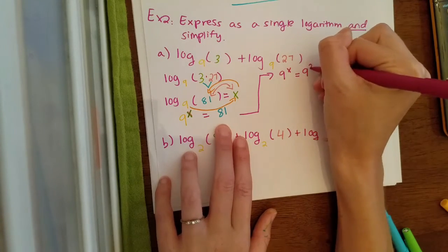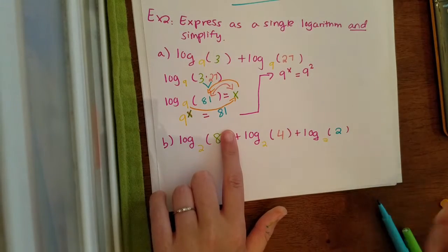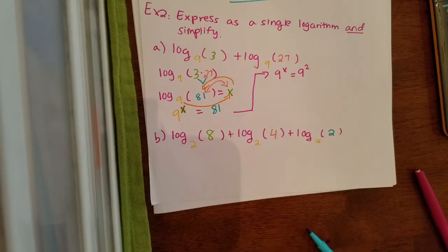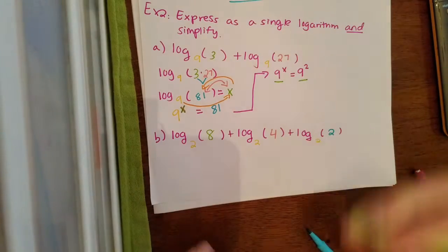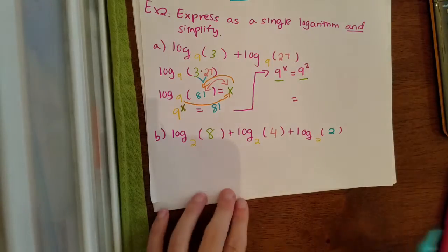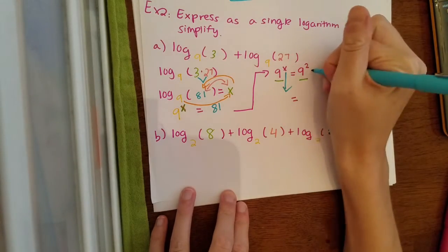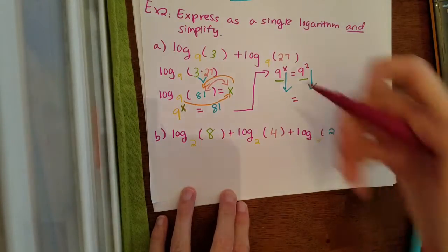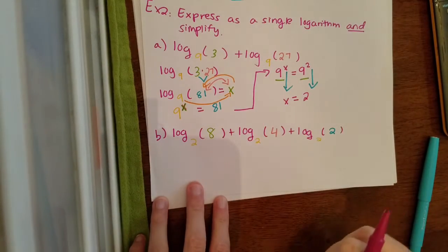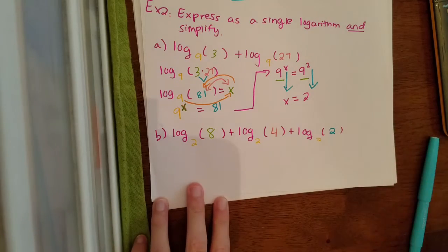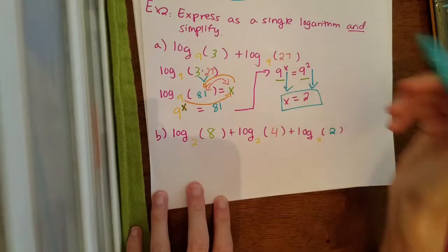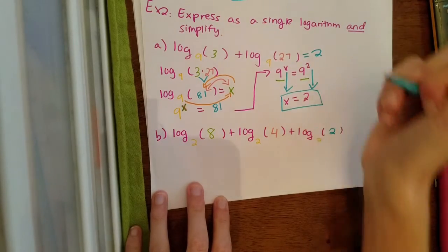I know 9 to the second power gives me 81. Now I have the same base on both sides, which means I can set my exponents equal to each other. Bringing the exponents down, we have x equals 2. All of that up there just equals 2. So my final answer is 2.